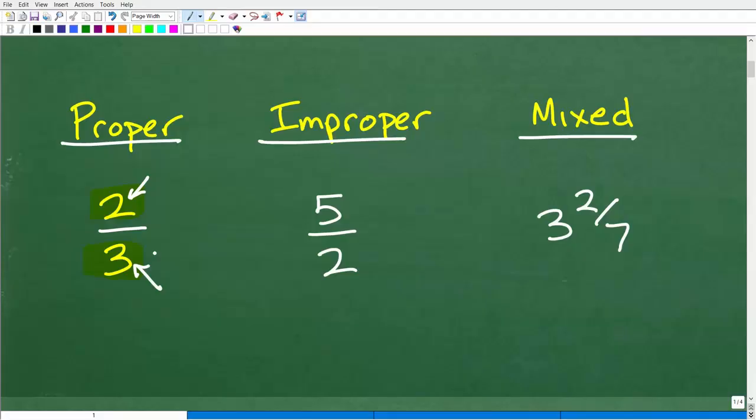When the numerator, in this case it's 5, when it's greater than the denominator like 5/2, well this is an improper fraction. We could take improper fractions and convert them into mixed numbers. That's a separate video, but just real quick, we take that numerator and divide it by the denominator, and we can rewrite an improper fraction as a mixed number.